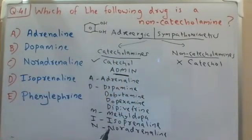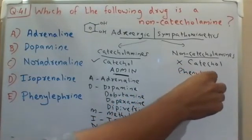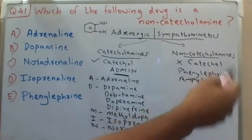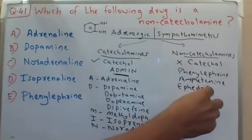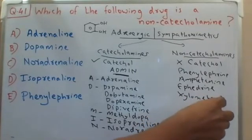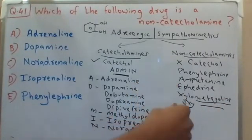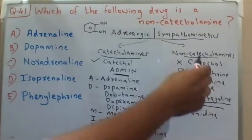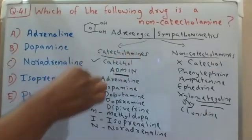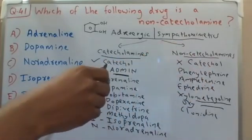Other adrenergic drugs such as phenylephrine, amphetamine, hydroxyamphetamine, ephedrine, pseudoephedrine, xylometazoline, oxymetazoline, naphazoline, and clonidine do not contain the catechol nucleus and come under the non-catecholamine category. Remember the catecholamine drugs, and all other adrenergic drugs fall under non-catecholamines.